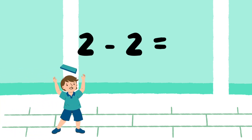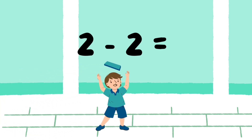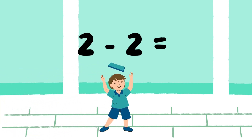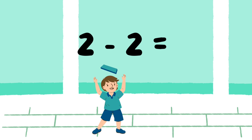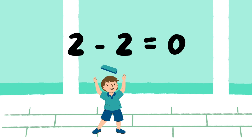Let's guess the symbol and solve the numbers. 2 subtraction 2. Number 0.